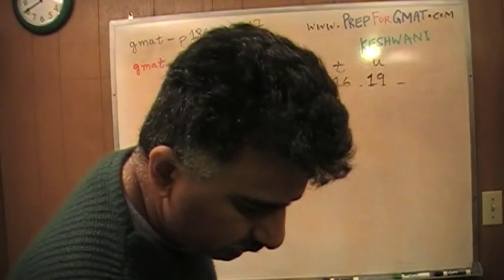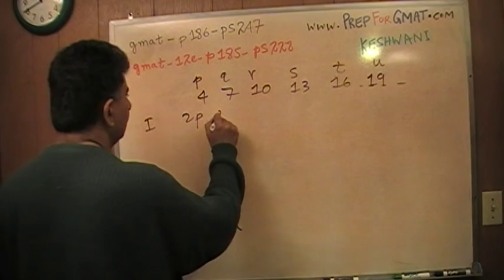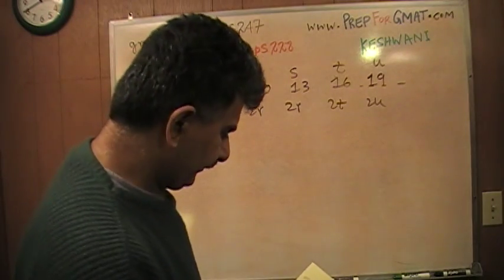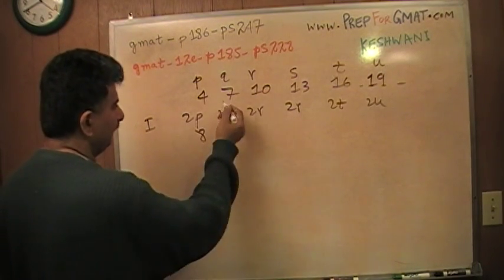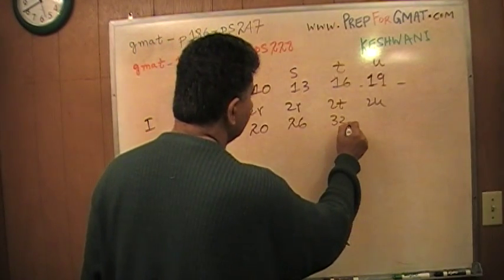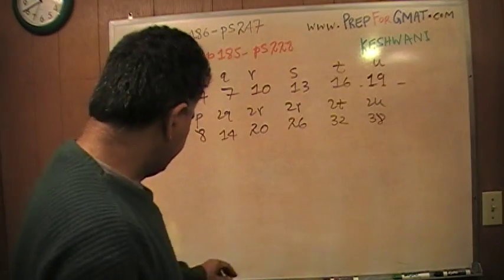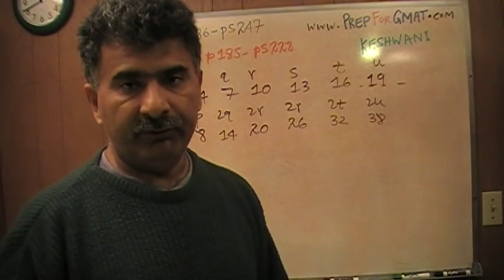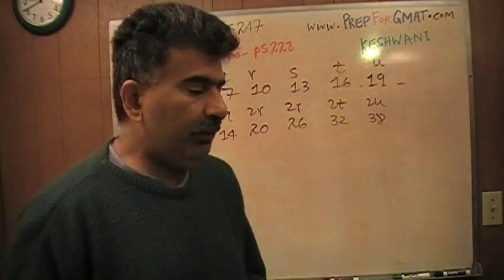The very first answer choice is 2P, 2Q, 2R, 2S, 2T, and 2U. Is this an arithmetic series? Well, 2P is going to be 8, this is 14, 20, 26, 32, and 38. Of course it's an arithmetic series — if the original series had a difference of 3 and you multiply everything by 2, now you have a difference of 6. It's still an arithmetic series.